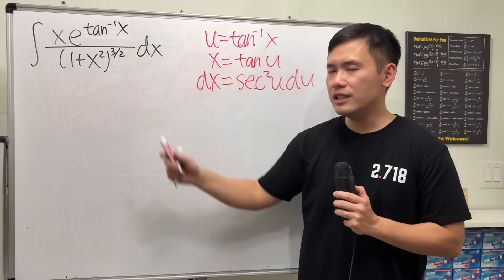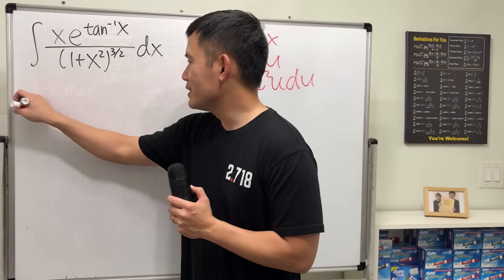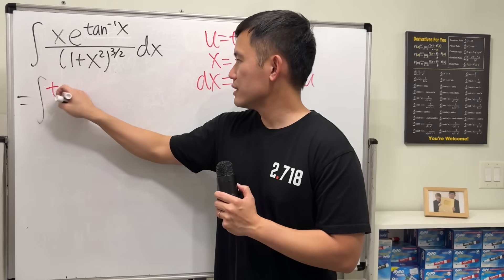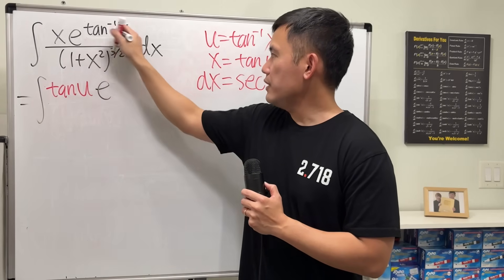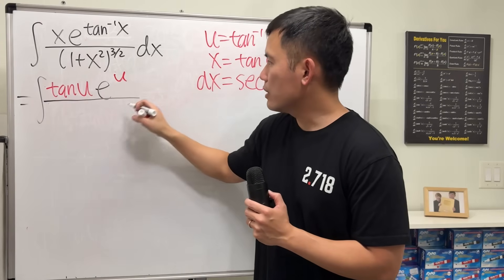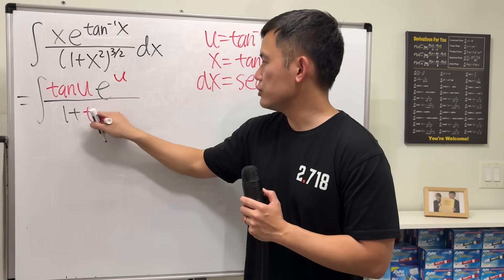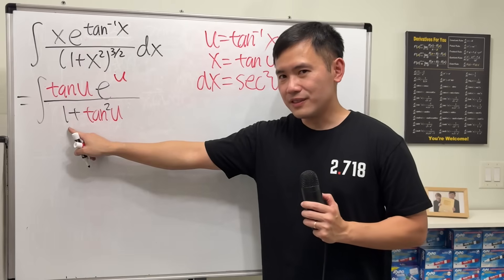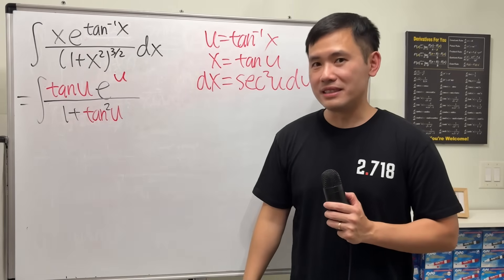Now we are ready to take this integral to the u-world. x becomes tangent u, e is still e, inverse tangent becomes u, and 1 plus x squared becomes 1 plus tangent squared u. This is very nice, because 1 plus tangent squared equals secant squared.